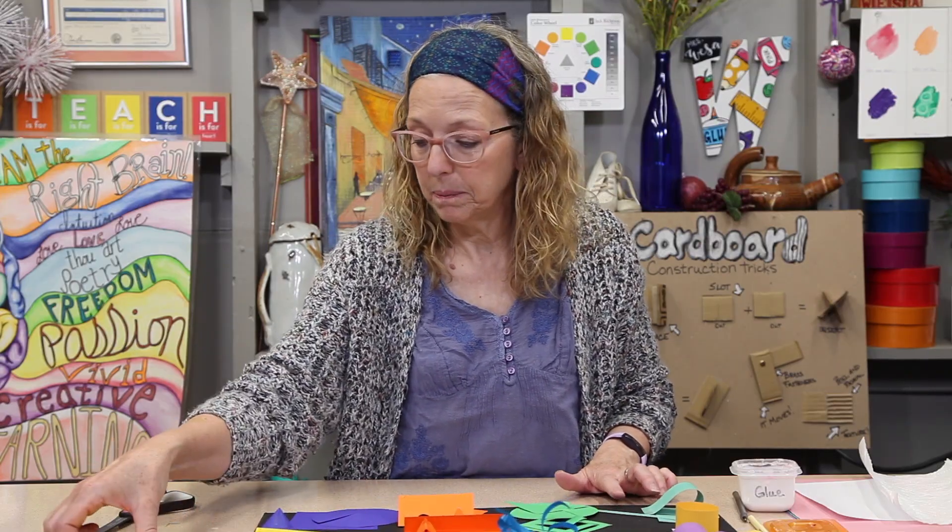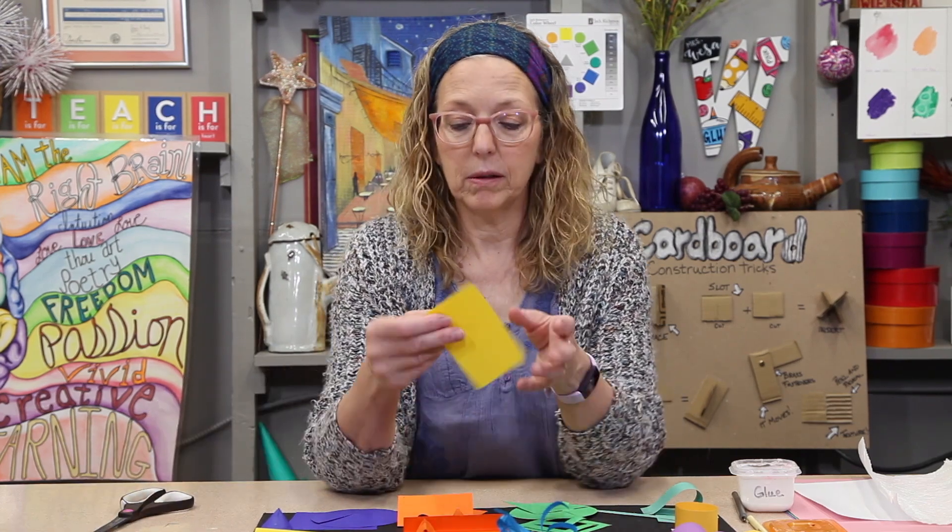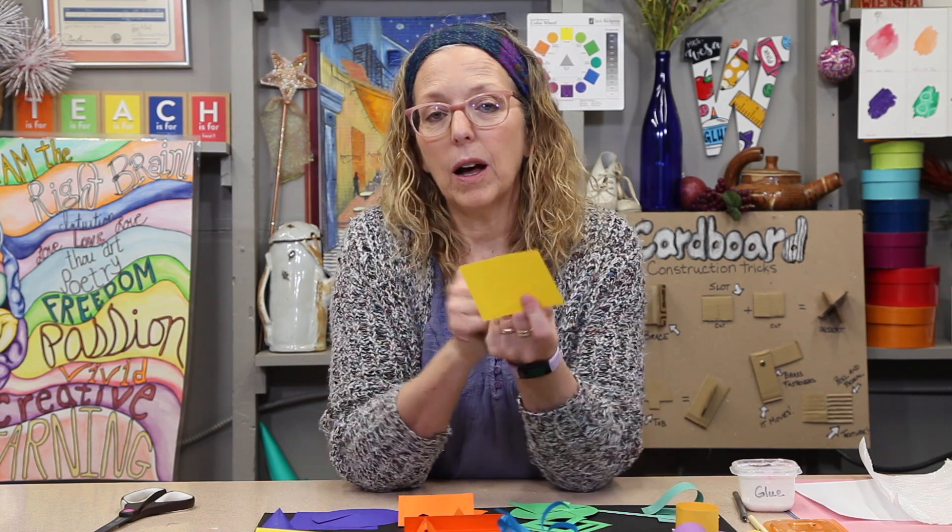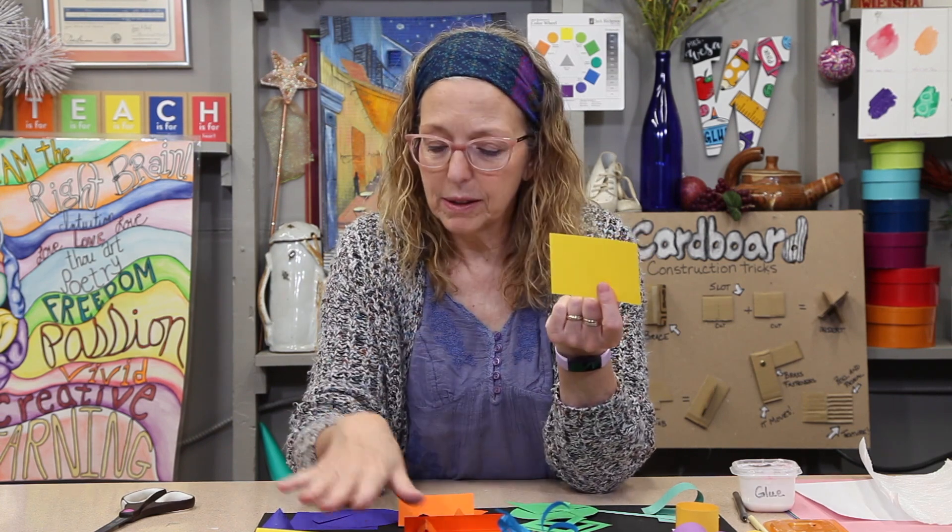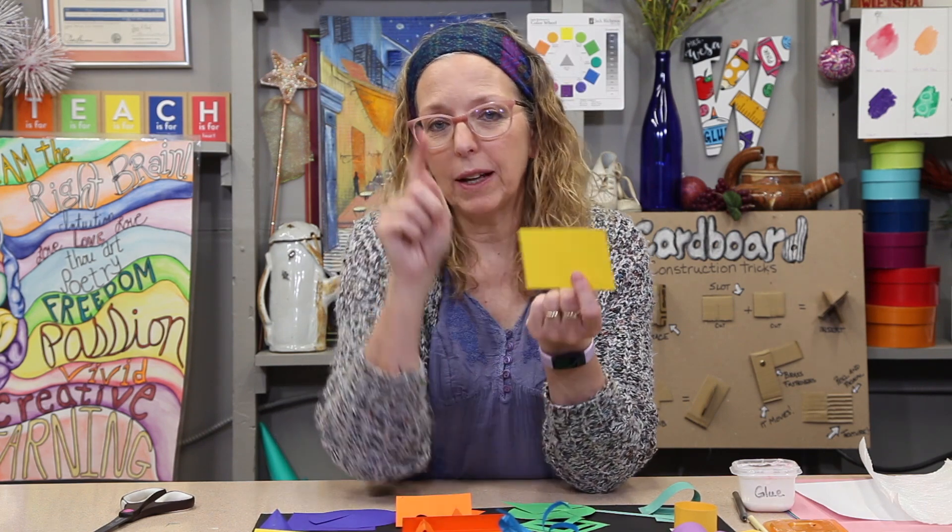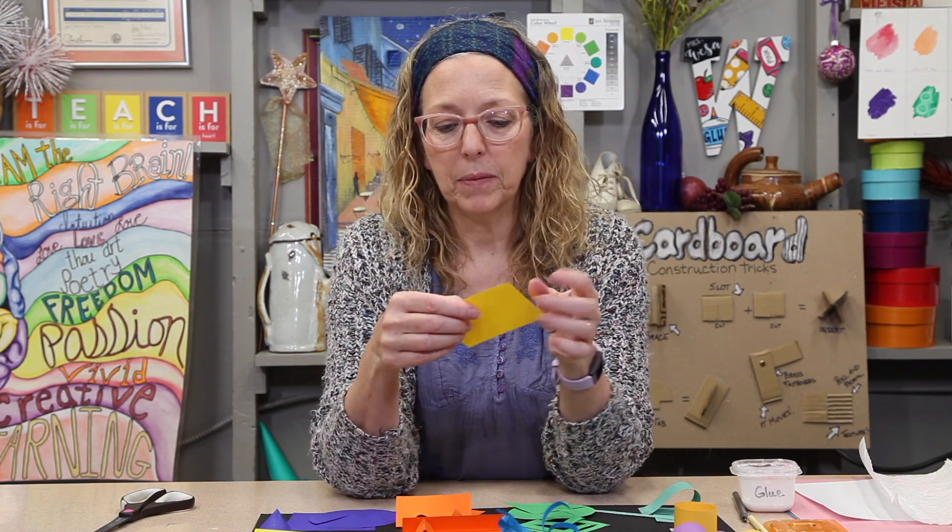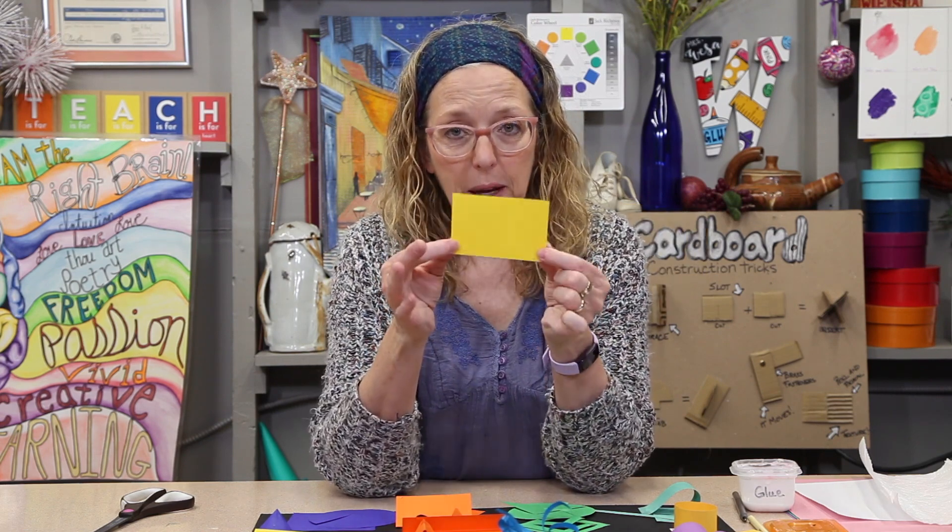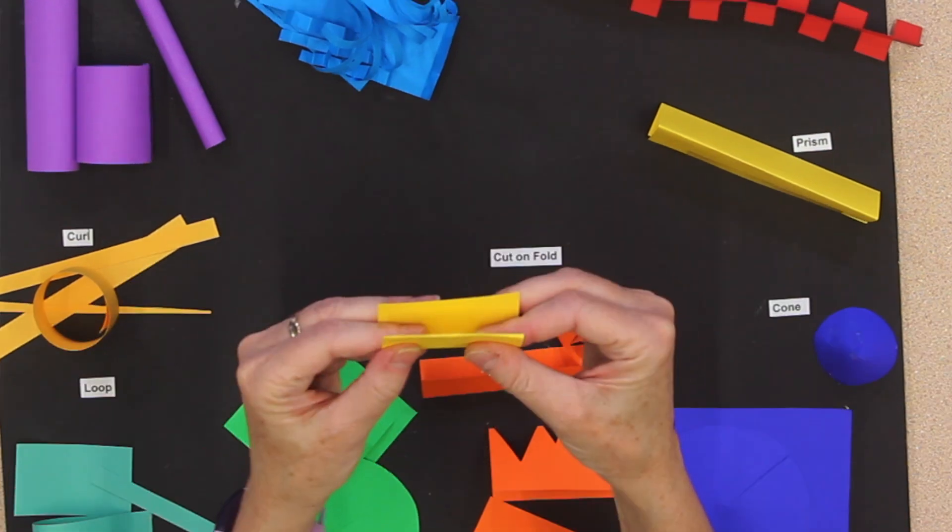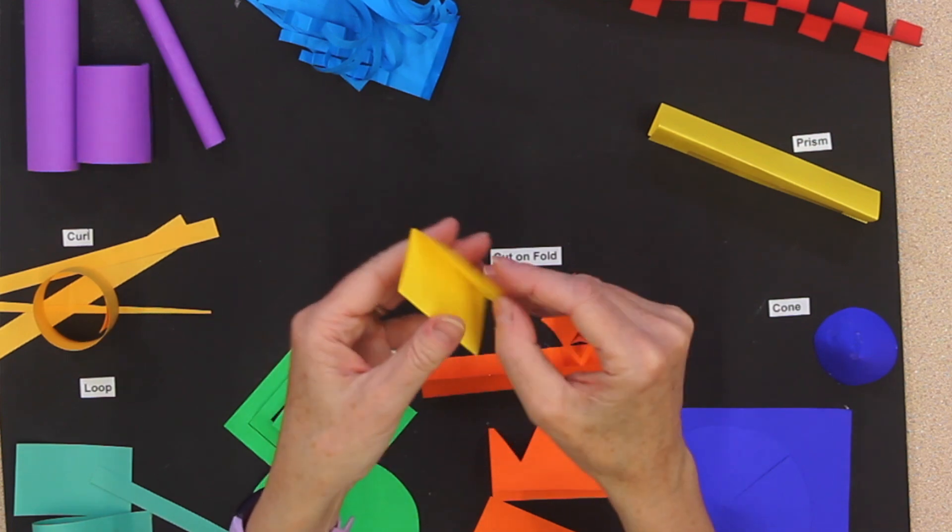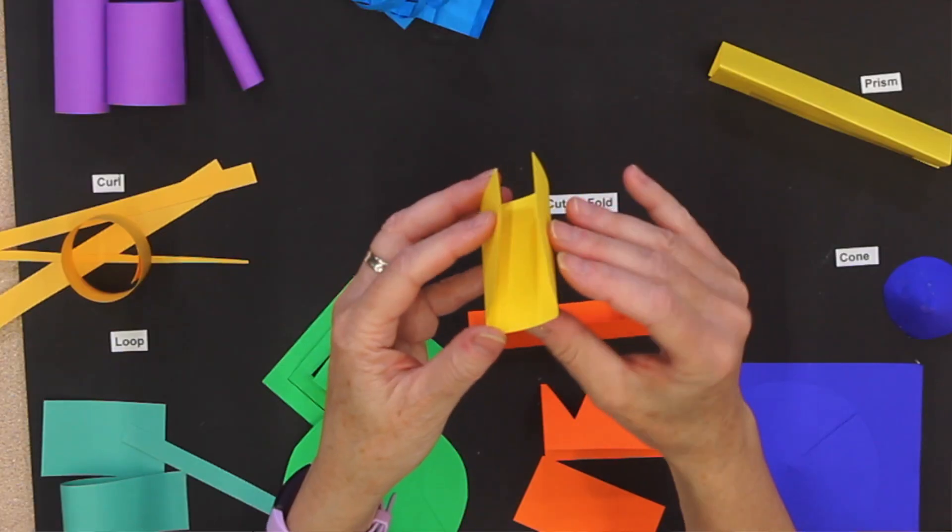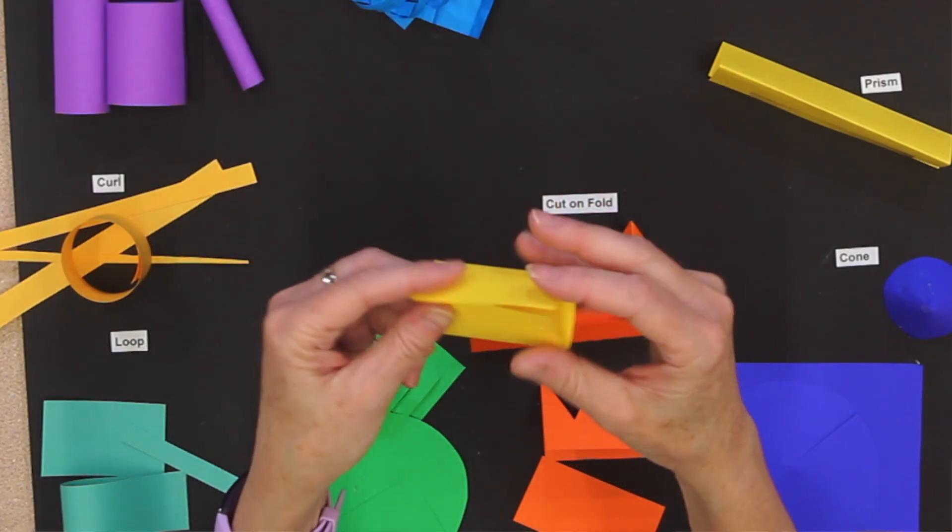Now the next one is a prism. Now I just got some different sizes of paper. And a prism or a, this is a triangular prism. And a triangle has how many sides? Three, right? So I'm going to fold my paper one, two, and how many sides does that give me? One, two, three.